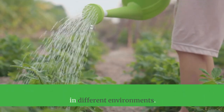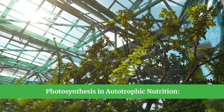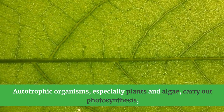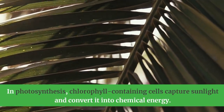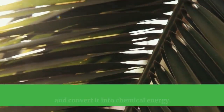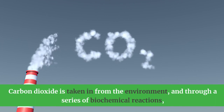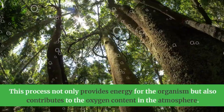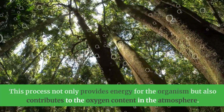In autotrophic nutrition, autotrophic organisms — especially plants and algae — carry out photosynthesis, a complex metabolic process. In photosynthesis, chlorophyll-containing cells capture sunlight and convert it into chemical energy. Carbon dioxide is taken in from the environment and, through a series of biochemical reactions, it is converted into glucose and oxygen. This process not only provides energy for the organism but also contributes to the oxygen content in the atmosphere.